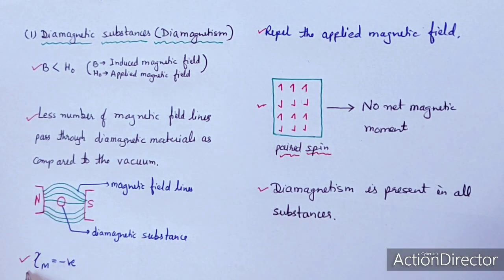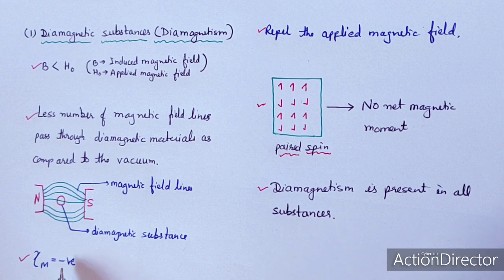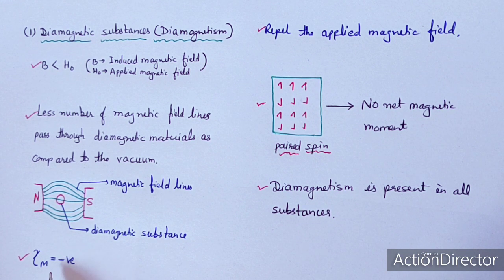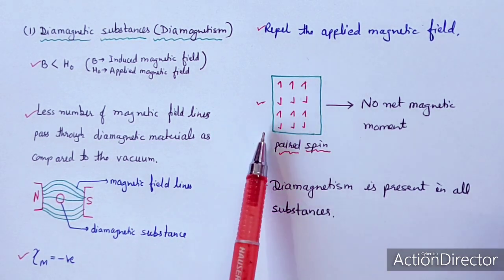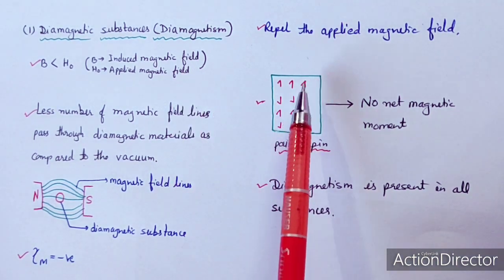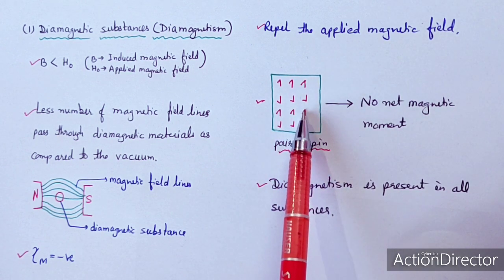The molar susceptibility value for diamagnetic substances is always negative. So if we experimentally calculate a substance's magnetic behavior and get a negative χm value, we can confirm it is a diamagnetic substance. In the case of diamagnetic substances, the electrons are paired — the electronic spin is paired.